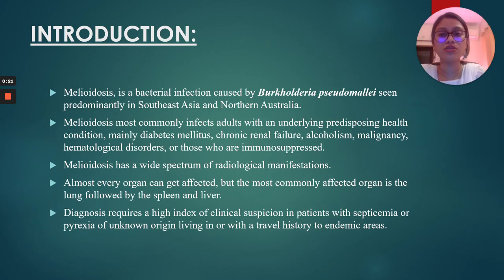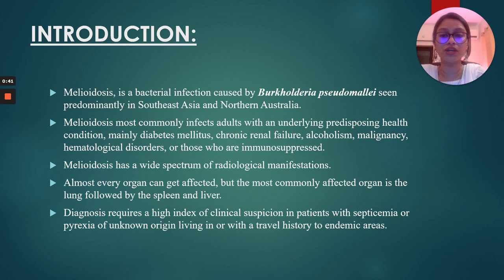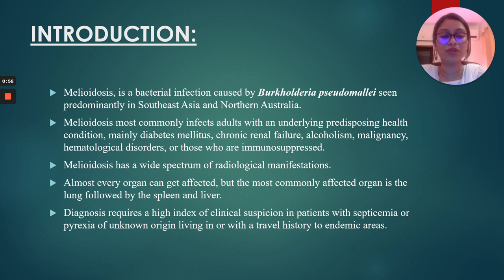Introduction. Meliodosis is a bacterial infection caused by Burkholderia pseudomallei, seen predominantly in Southeast Asia and Northern Australia. It commonly infects adults with an underlying predisposing health condition, mainly diabetes mellitus, chronic renal failure, alcoholism, malignancy, etc. Meliodosis has a wide spectrum of radiological manifestations — almost every organ can get affected, but the most commonly affected organ is the lung, followed by the spleen and the liver. Diagnosis requires a high index of clinical suspicion in patients with septicemia or pyrexia of unknown origin living in, or with a travel history to, endemic areas.